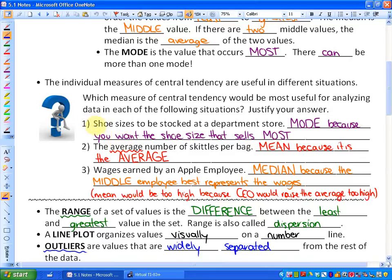So what would be the most useful for analyzing shoe sizes to be stocked at a department store? You could defend a number of the central tendencies. My feeling is that mode is the best measure for analyzing this because you want the shoe size that sells the most, and that's what mode defines.